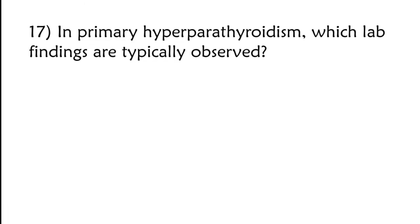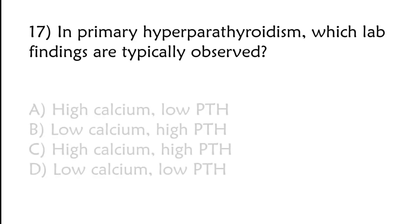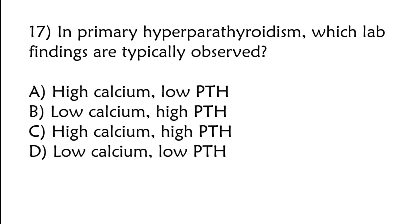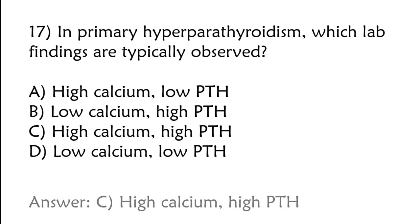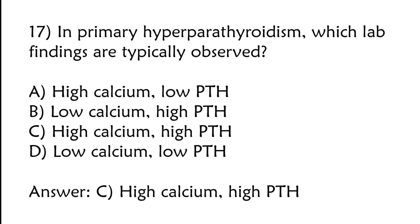In primary hyperparathyroidism, which lab findings are typically observed? A) High calcium, low PTH; B) Low calcium, high PTH; C) High calcium, high PTH; D) Low calcium, low PTH. The correct answer is option C: High calcium, high PTH.